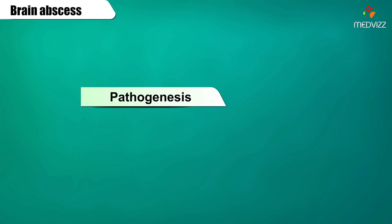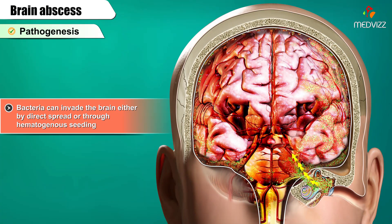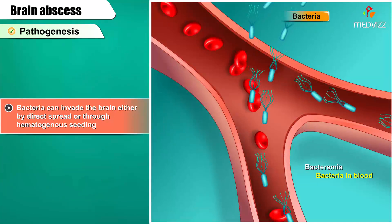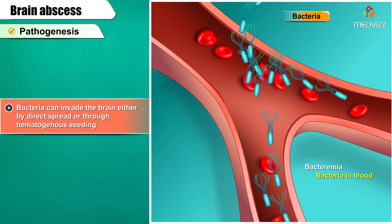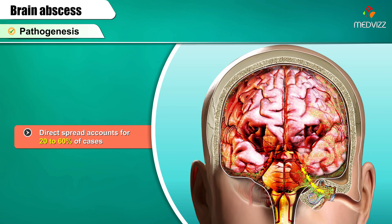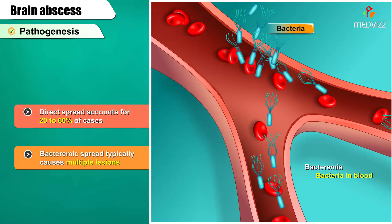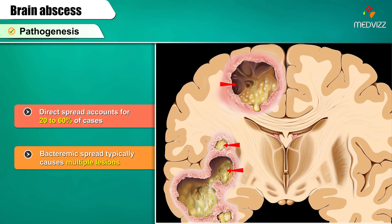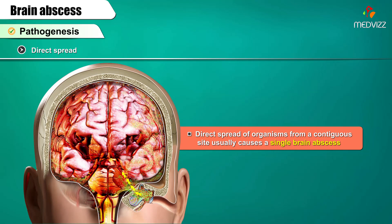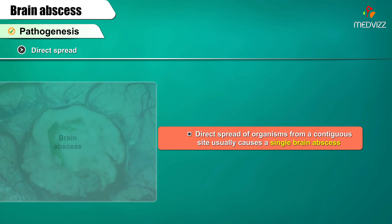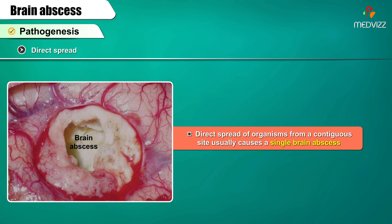Pathogenesis: Bacteria can invade the brain either by direct spread or through hematogenous seeding. Direct spread accounts for 20-60% of cases. Bacteremic spread typically causes multiple lesions. Direct spread of organisms from a contiguous site usually causes a single brain abscess.